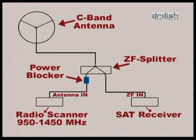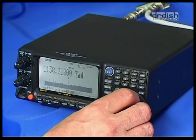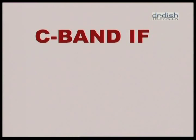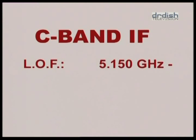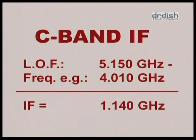The equipment is now ready for reception. The IF frequency of C-band is between 950 and 1450 MHz. When we find a valid SCPC signal on 4.010 GHz, we need to figure out the corresponding IF. The local oscillator frequency of a C-band LNB is 5.150 GHz. We subtract the receiving frequency — 4.010 GHz from 5.150 — and get an IF of 1.040 GHz, or 1040 MHz. That's what we'll set the broadband receiver to.